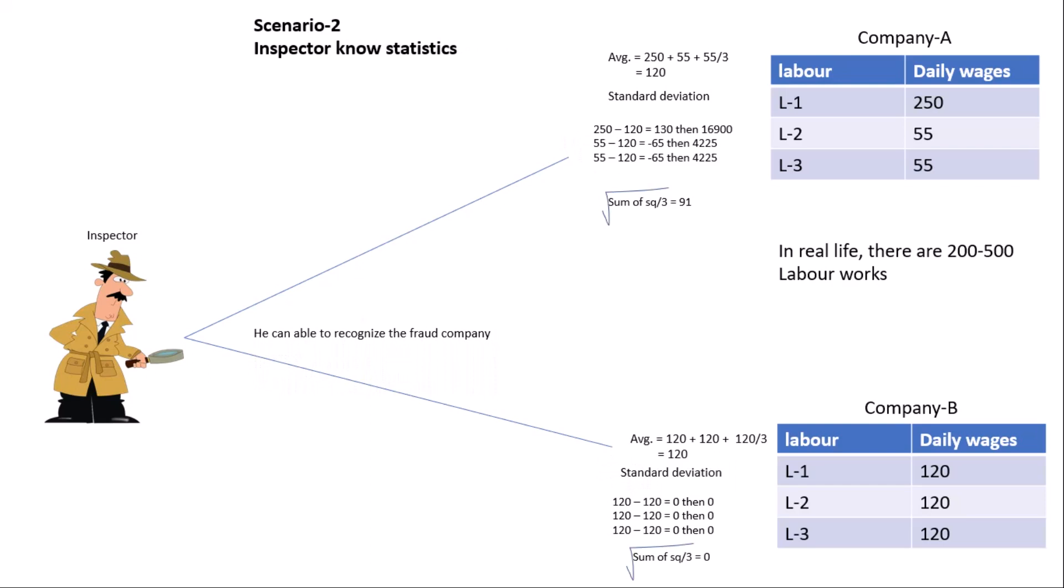If this is true, what is he able to know? Something is going wrong in Company A. So now what does he do? He sends constable and head constable for inspection in Company A. As you can see, knowing the variation in data helps in making decisions.